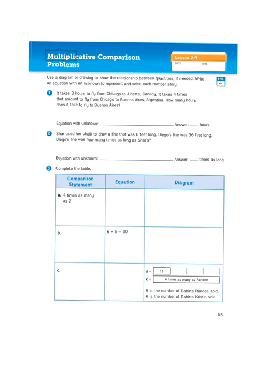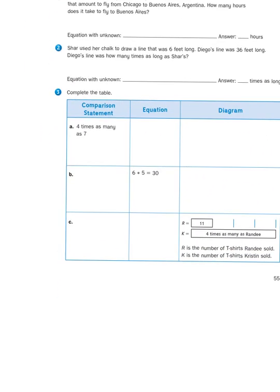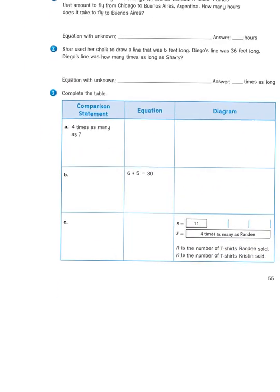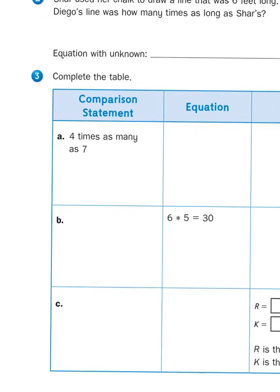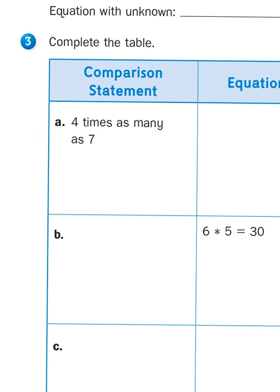Problems 1 and 2 look a lot like the kinds of problems we did in Lesson 2.8. So, I'm just going to skip down to the tough one, down at the bottom where it says complete the table. It says comparison statement, equation, and diagram all at the top of your table. In 3a, you see an example of a comparison statement, 4 times as many as 7.